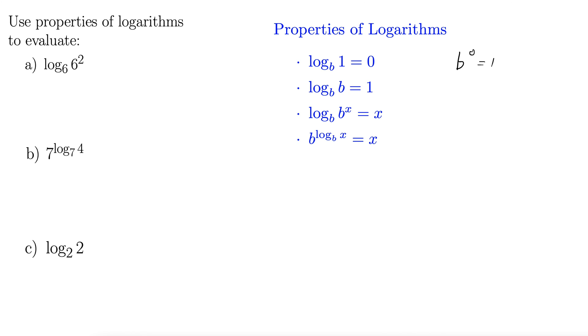A similar approach works on the second property. We have log base b of b equals 1. Well, if we just didn't look at the equals 1 part and we said b to what power gives us b? b to the 1 gives us b. So then log base b of b must be 1. We can evaluate logs using this method here.